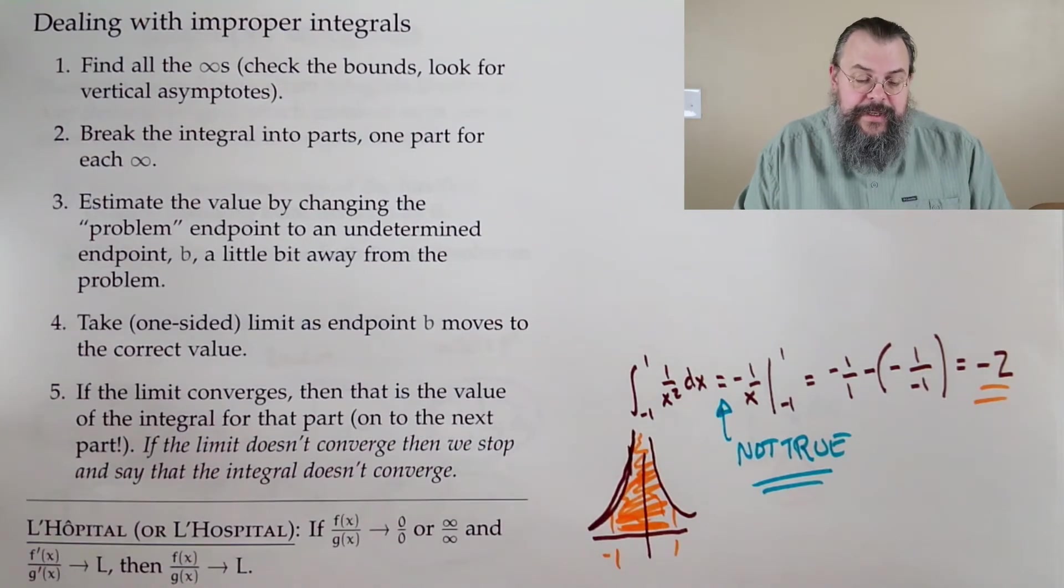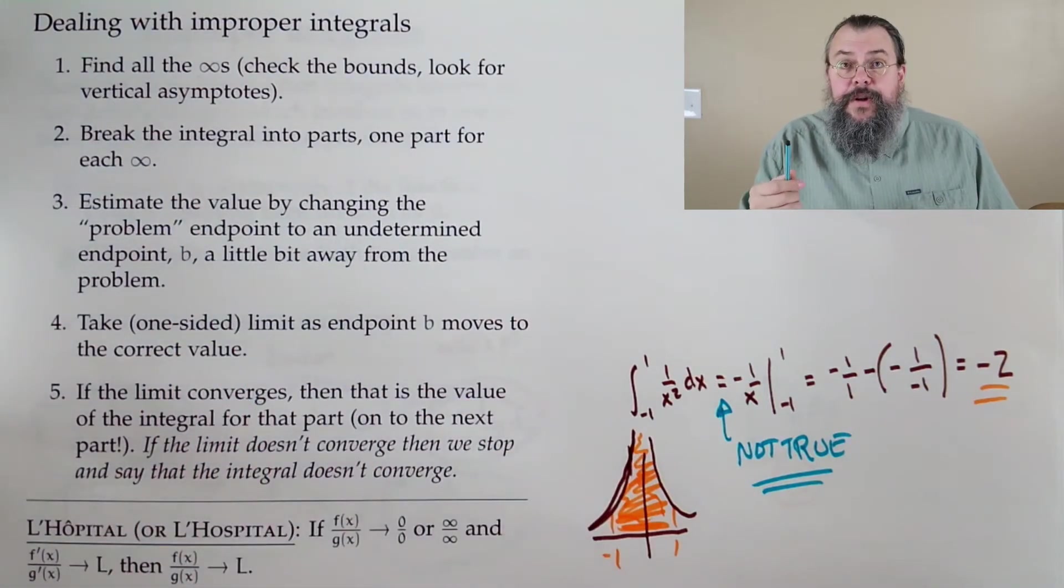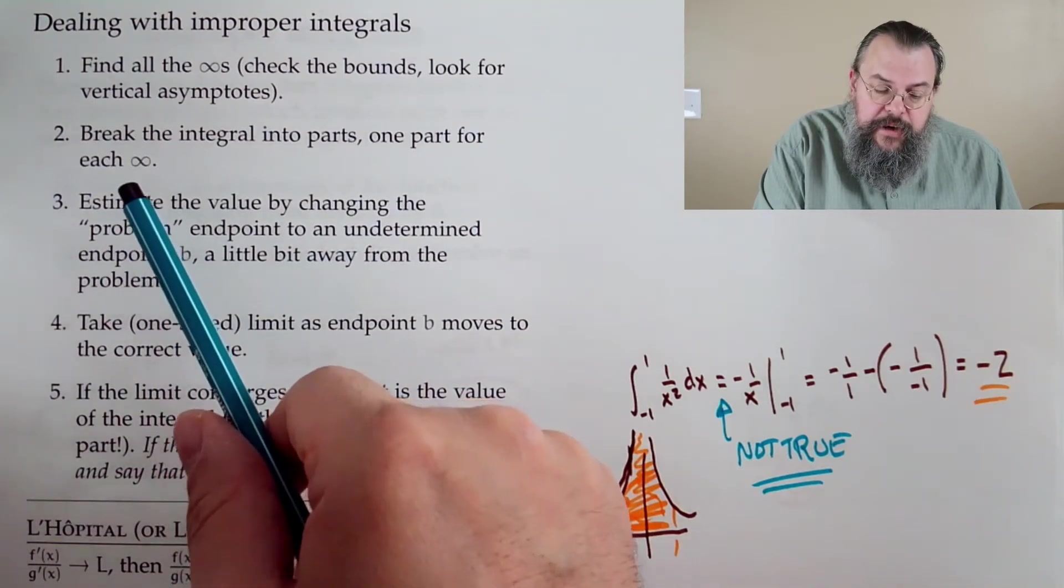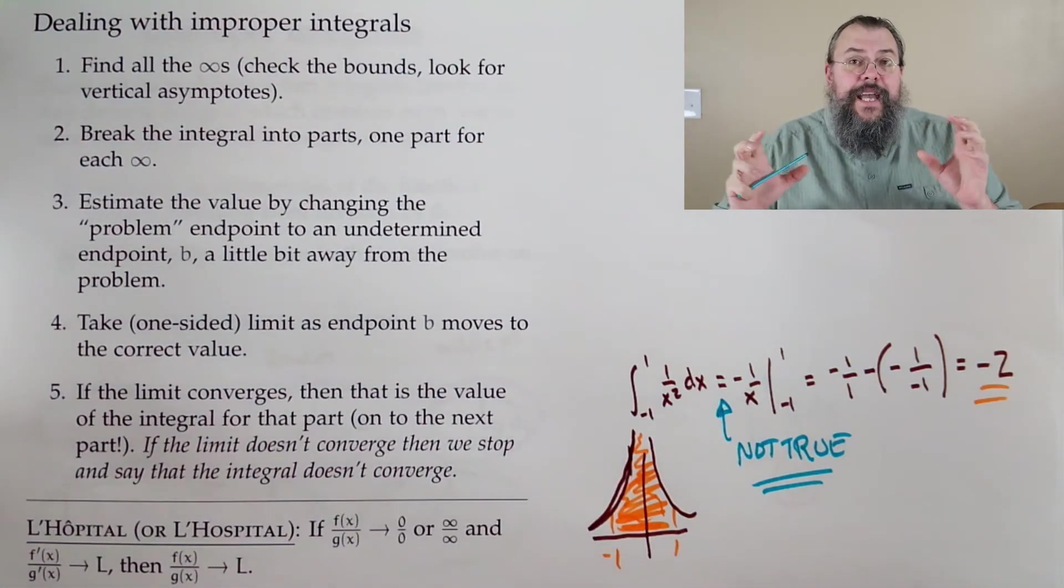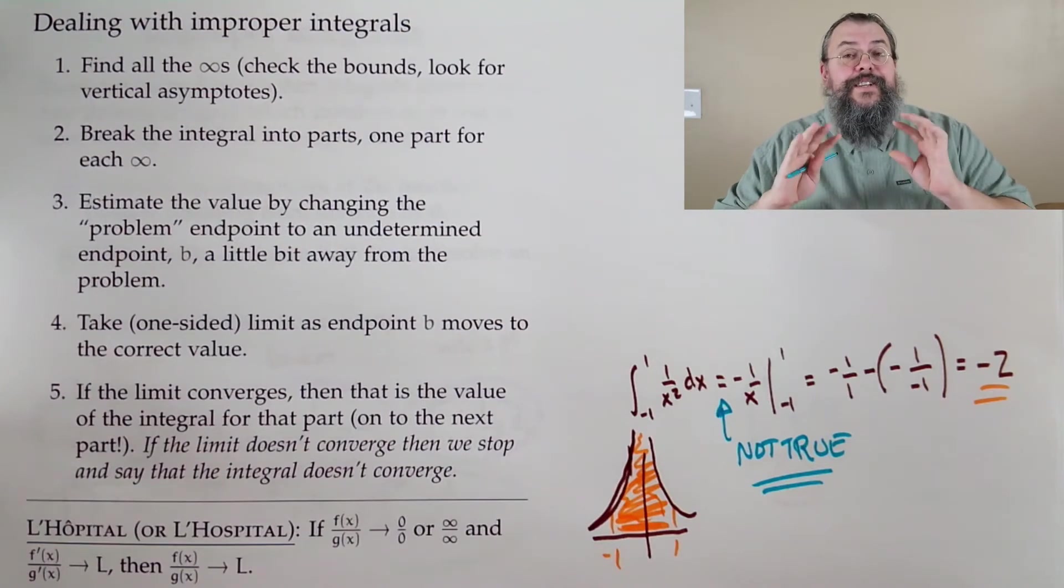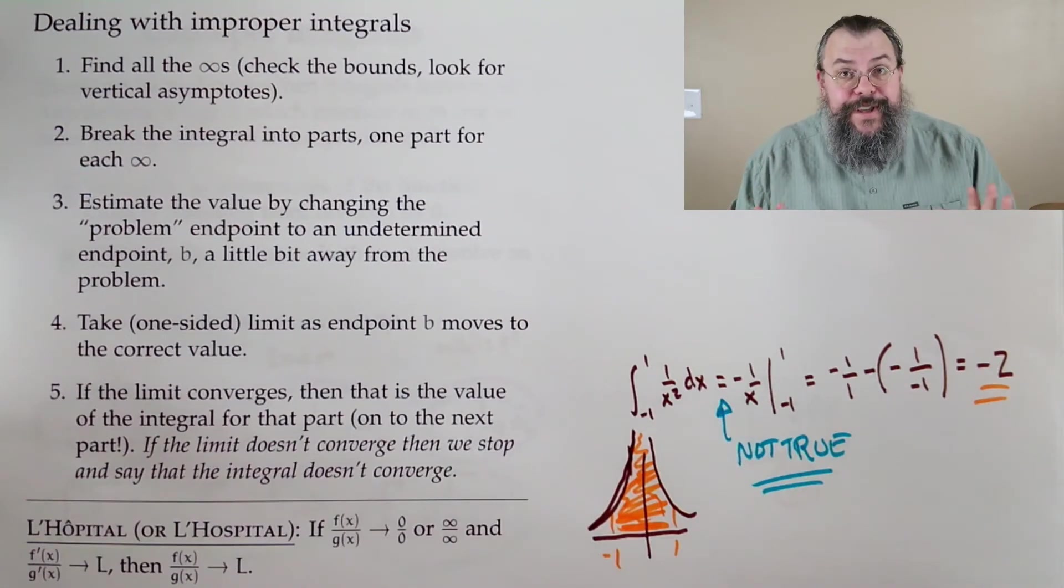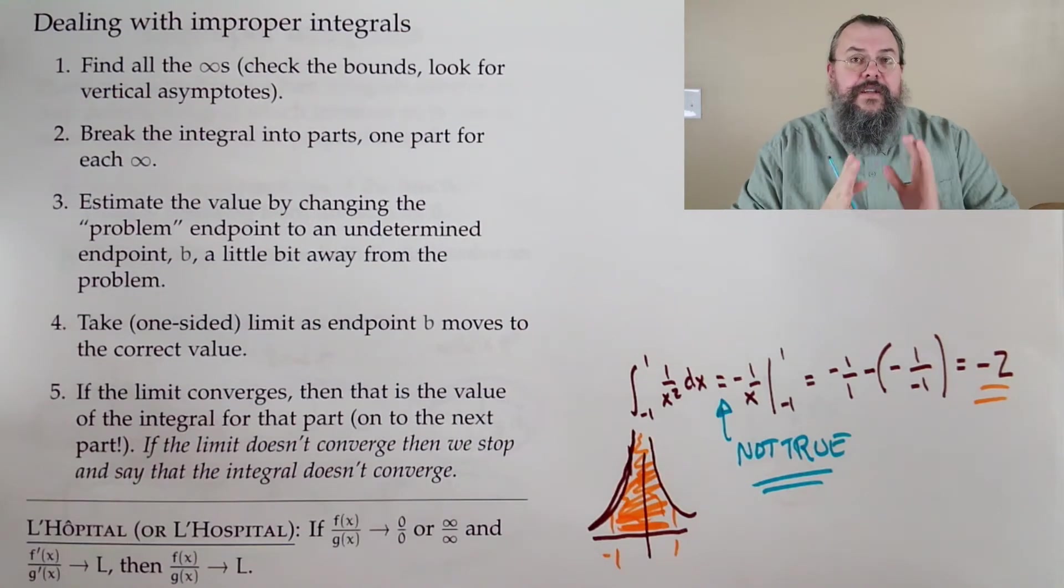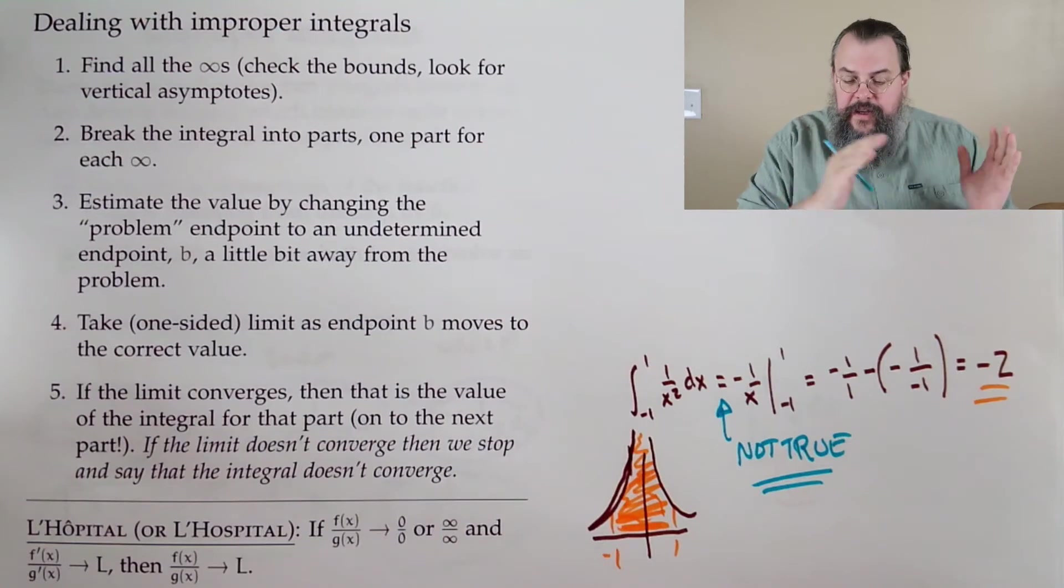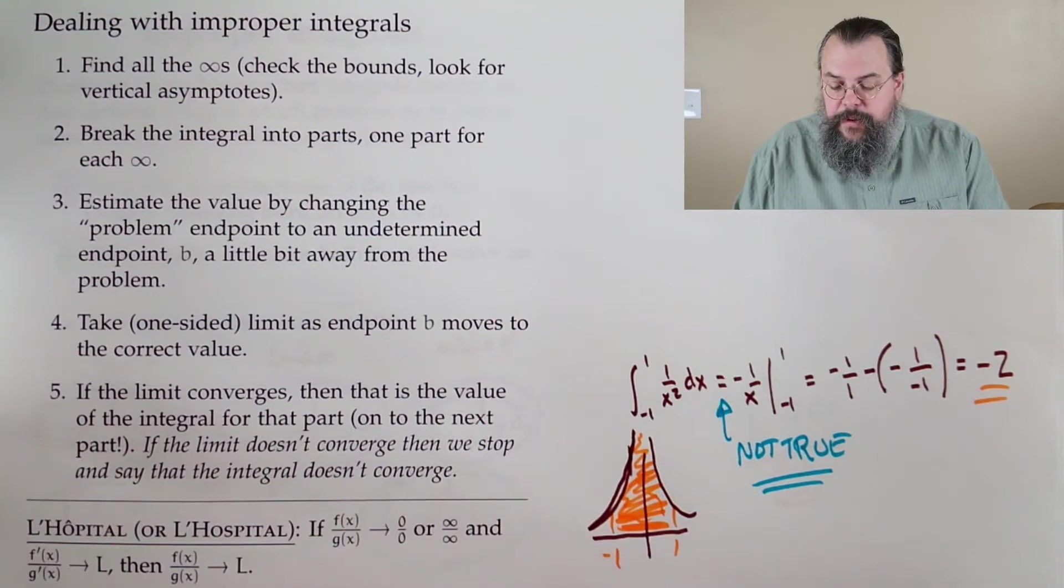We have to find a way to deal with improper integrals. What's the procedure? Our first step is find the infinities. Look in the bounds. Look where we have things blowing up. Second step: break things into parts, one for each infinity involved. You might say, why can't we just do it all at once? And the answer is strange things can happen. We really want to handle each individual part by itself.